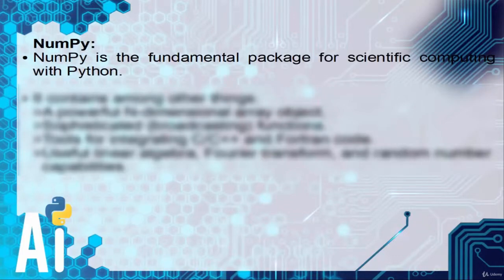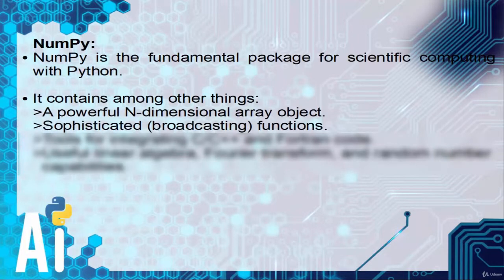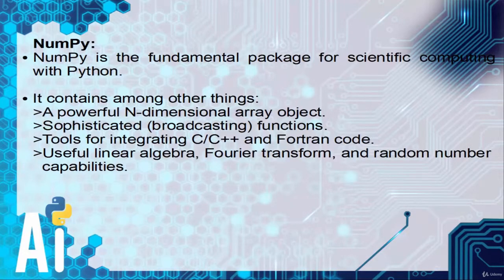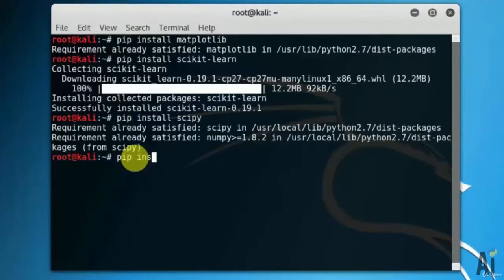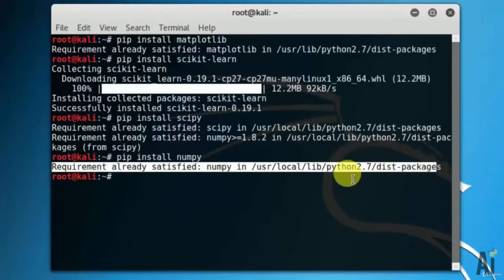Now let's move on to installing numpy. Numpy is the fundamental package for scientific computing with Python. It contains a powerful n-dimensional array object, sophisticated functions, tools for integrating C, C++, and Fortran code, and useful linear algebra, Fourier transform, and random number capabilities. Let's install this using the command pip install numpy. As you can see, I have already installed the package, that's why it's showing requirement already satisfied.